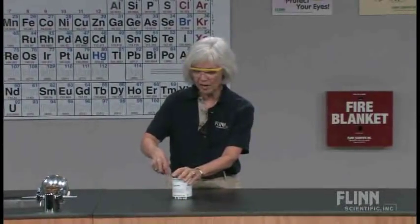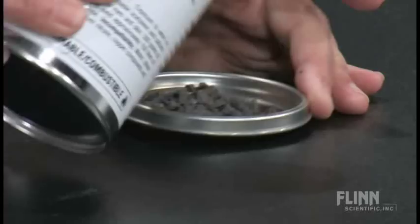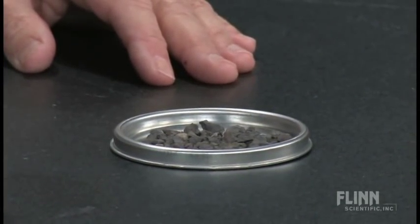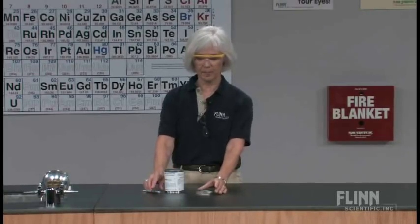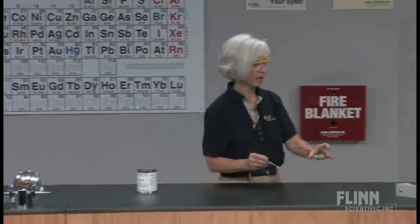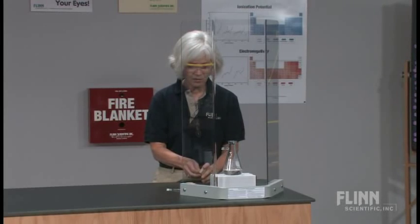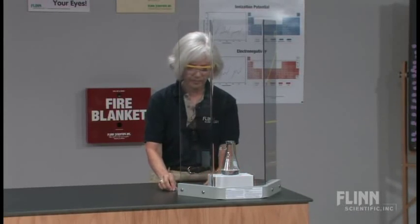My calcium carbide chunks are these gray chunks. And I'm going to select three medium-sized chunks, drop them into the flask, and then bring the lit match. Because of the speed at which I do this, I want to have the matches already out, have my corks ready to go here.